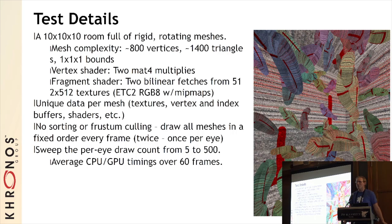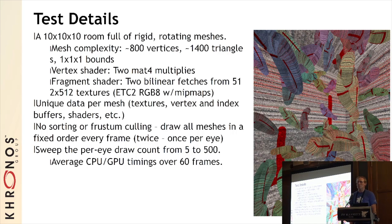The vertex shader was a couple of matrix multiplies and some attribute forwarding. The fragment shader was a couple of bilinear texture fetches. These shaders weren't doing anything terribly useful — they were chosen to be more or less representative of the level of complexity used in a real mobile title, according to the people I talked to.